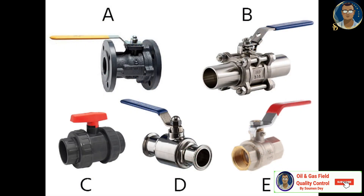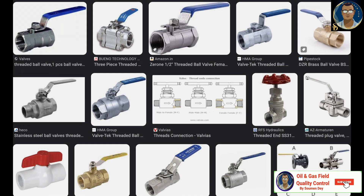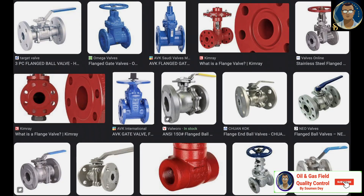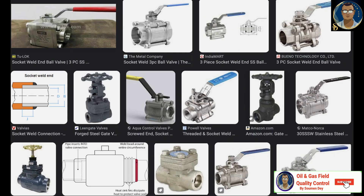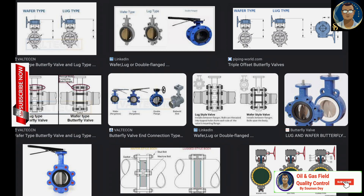Types of valve based on their end connection. The connection type must be compatible with the piping. Types include: screwed or threaded, mostly used for instrument or sample point connections; flanged, one of the most commonly used ends for piping; butt welded, widely used in high pressure and high temperature operations; socket welded, used in small bore piping where threaded connections are not permitted; and wafer and lug, commonly used for compact valves in systems with limited space.